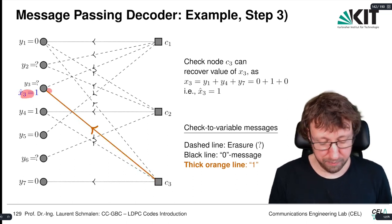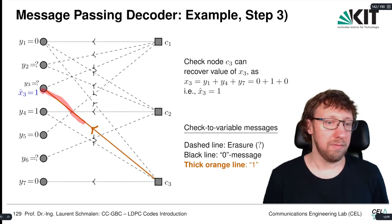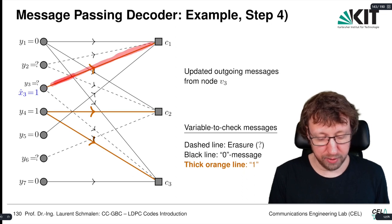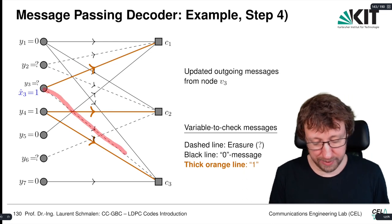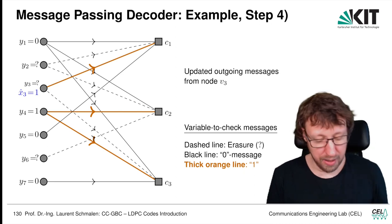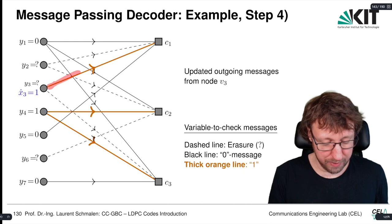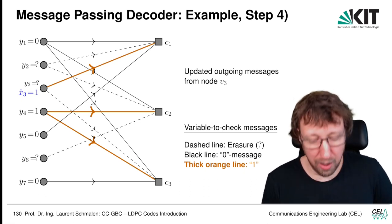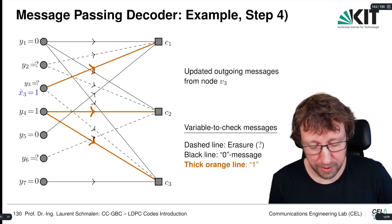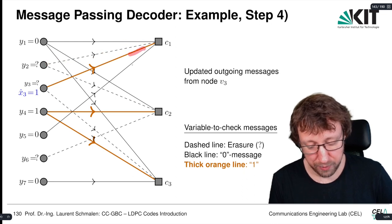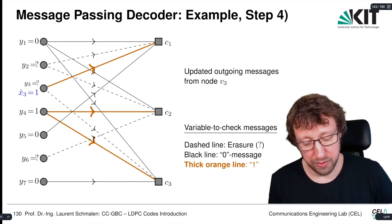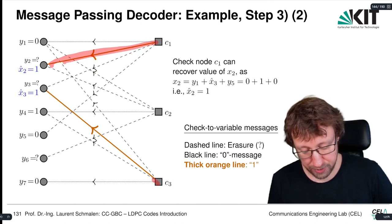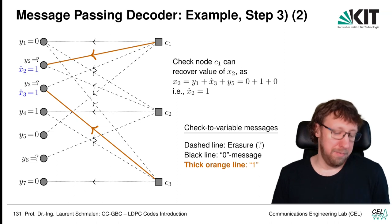Now we broadcast the variable nodes again. Variable node X3 has been recovered as a one, so it can put a one along the other edge. Now check node C1 has only one erased edge. We cover that edge, the other incoming messages are not erased: zero plus one plus zero gives a one, so we send a one along that edge. And for C3 it's the same as previously. That means we have recovered X̂₂.